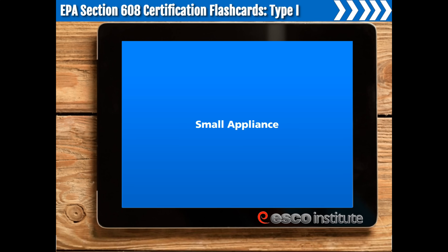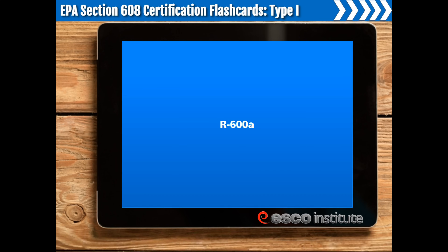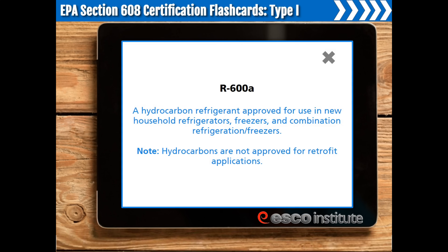Small Appliance. Products manufactured, fully charged, and hermetically sealed in a factory with five pounds or less of refrigerant. When servicing a small appliance, it is not mandatory to repair a leak, but it is recommended to do so whenever possible. Technicians servicing small appliances must have Type 1 or Universal Certification. R600A is a hydrocarbon refrigerant approved for use in new household refrigerators, freezers, and combination refrigeration freezers. Note: hydrocarbons are not approved for retrofit applications.